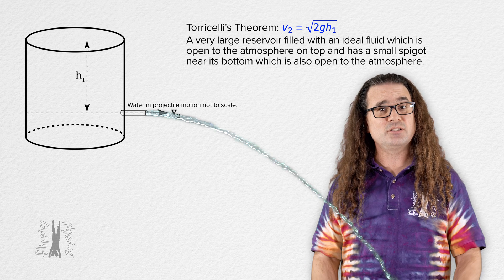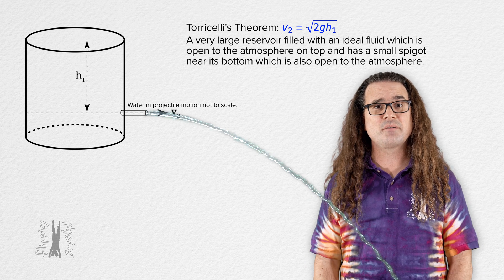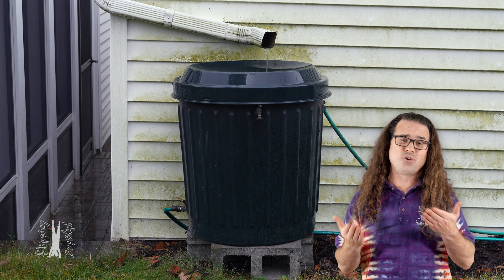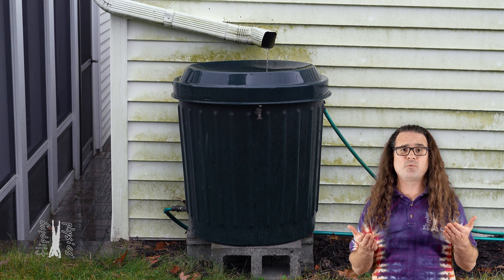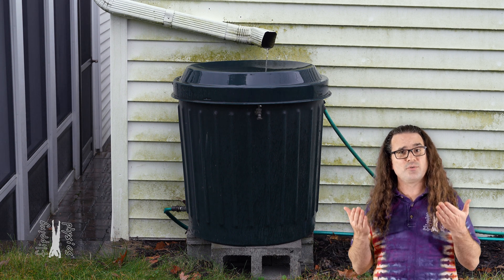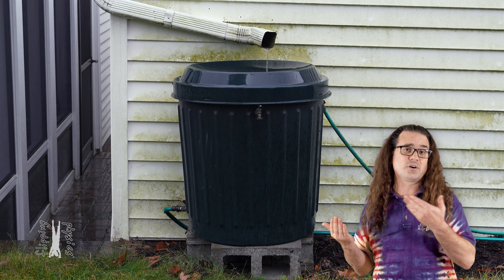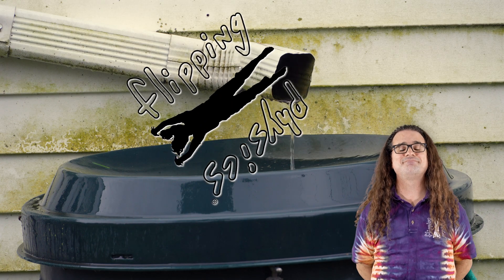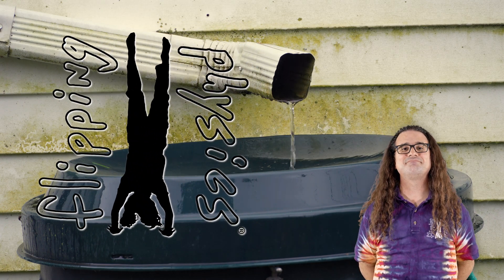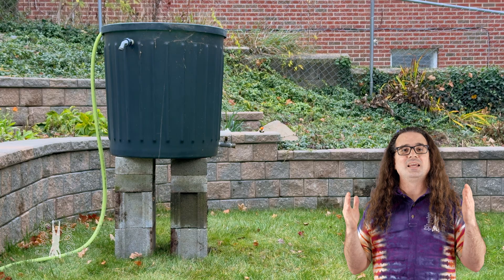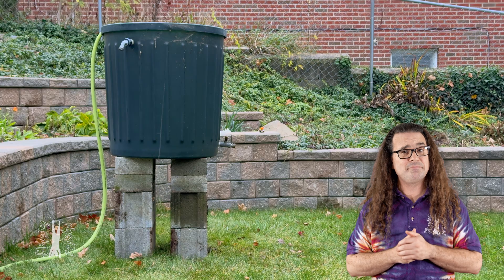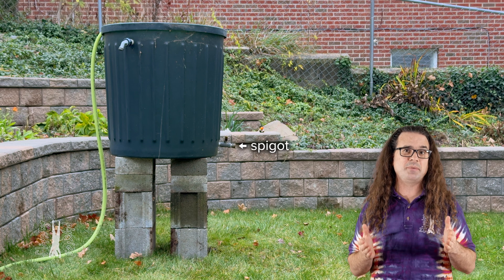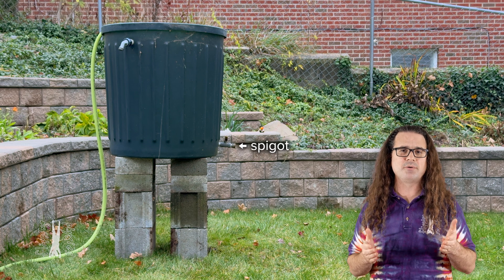Let's demonstrate Torricelli's theorem using a rain barrel. This rain barrel normally collects water which falls on the roof of our garage. Flippin' physics. Today I have placed it on several cement blocks to elevate the spigot above the ground.